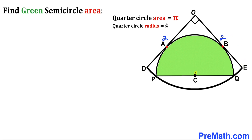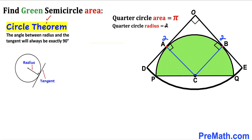Next, I am connecting center C with points A and B. By the circle theorem, the angle between a radius and a tangent is always 90 degrees. As seen in the diagram, this is our tangent line and this is our radius, so these angles each turn out to be 90 degrees.